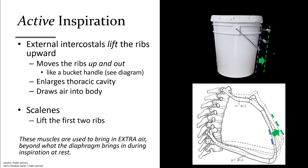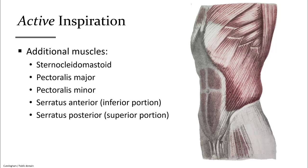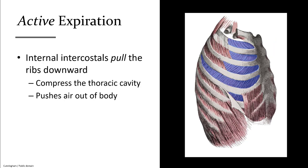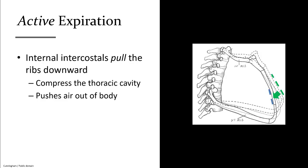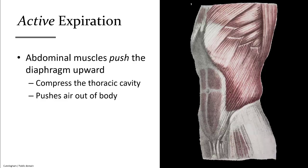Scalenes can also aid this process with the first two ribs. This is known as active inspiration, as it brings in more air than just the diaphragm alone. Additional muscles aid in active inspiration to expand the thoracic cavity when a very large breath is taken. If air needs to be expelled more forcefully than a regular breath out, the internal intercostal muscles can compress the thorax and pull the ribs downward to force more air out.